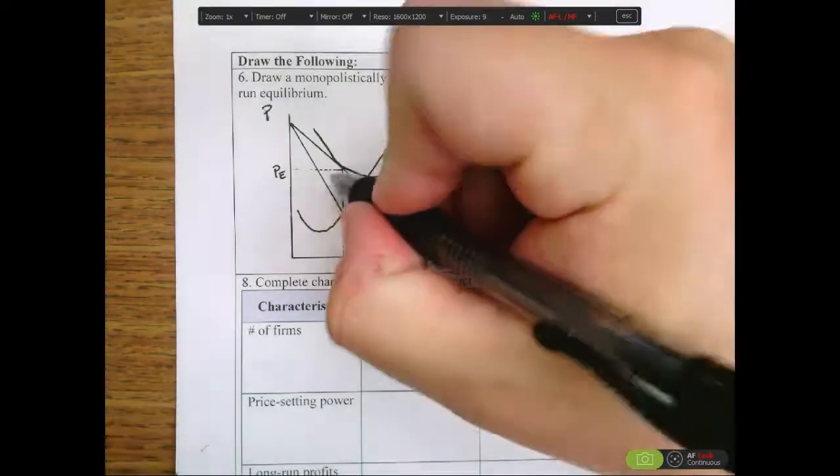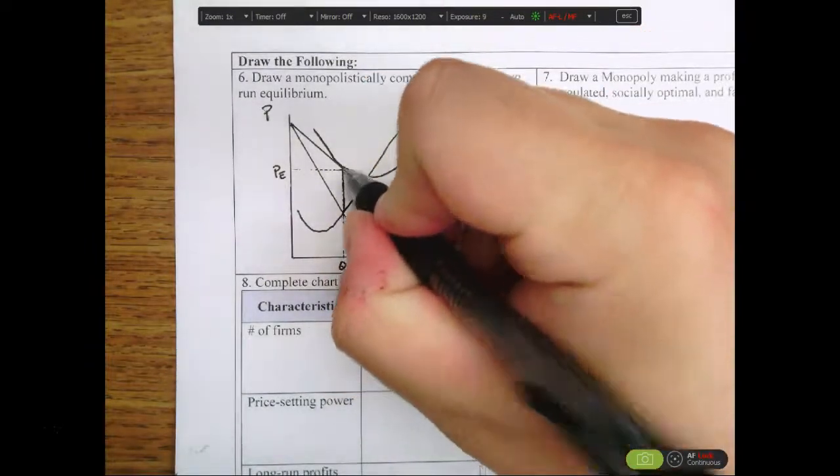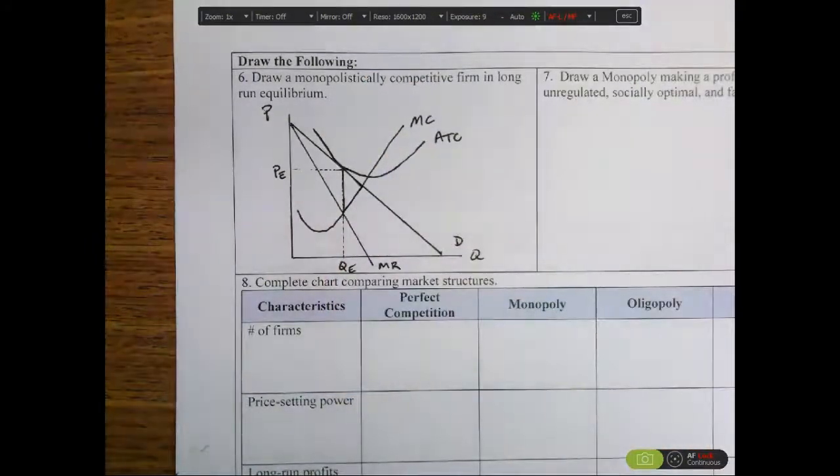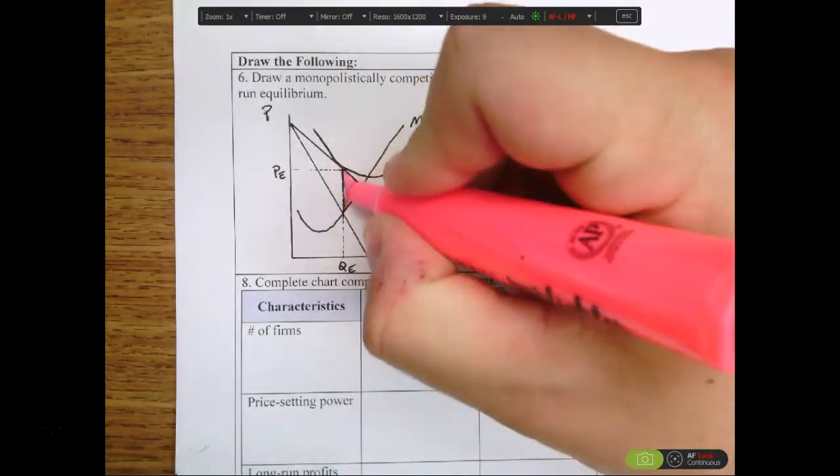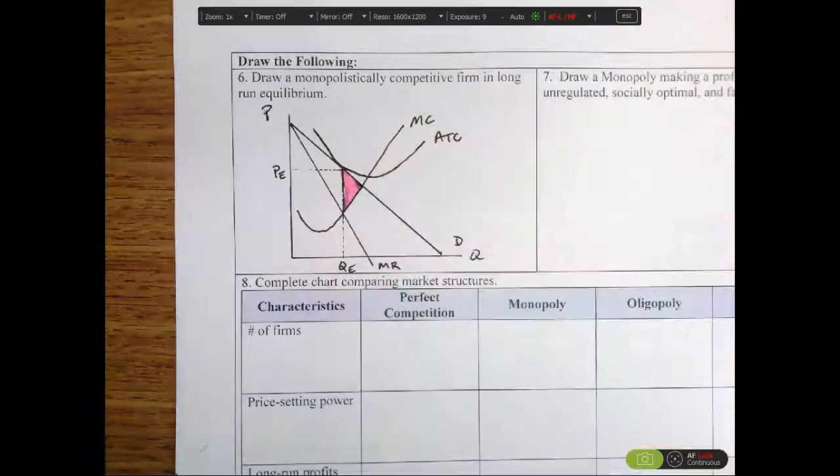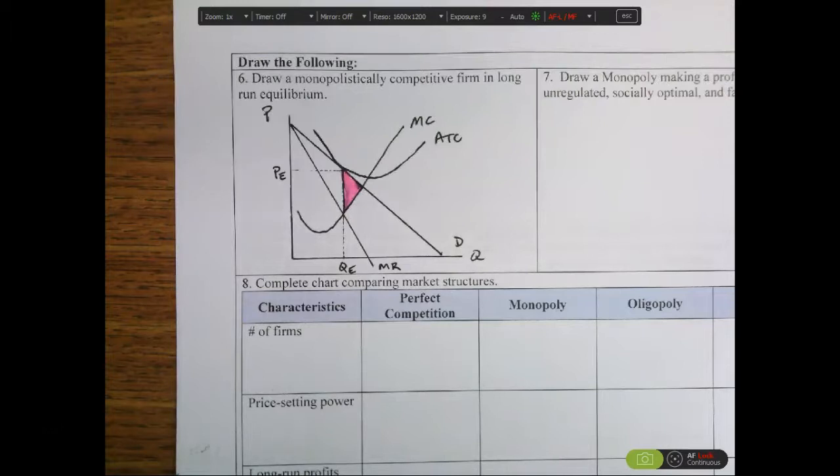And so we have this triangular area right in here where we have mutually beneficial trades that ought to happen, would happen in perfect competition, but don't with a monopolistically competitive firm. And so then we have deadweight loss as measured in that area of the pink triangle.